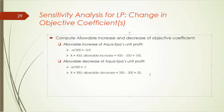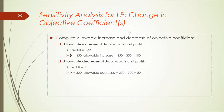Similarly, we can find the allowable increase for AquaSpar's unit profit. Assume the new unit profit is x, so the slope of the new level curve is negative x divided by 300. We can increase AquaSpar's unit profit until the slope of the level curve equals the slope of the labor constraint, which is negative 3 over 2. Solving: negative x over 300 equals negative 3 over 2, giving x equals 450. Therefore, the allowable increase of AquaSpar's unit profit is 450 minus 350, which is $100.